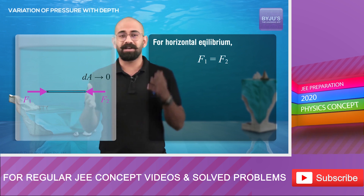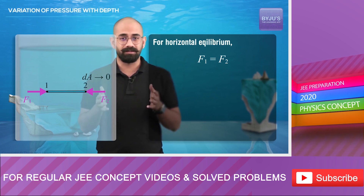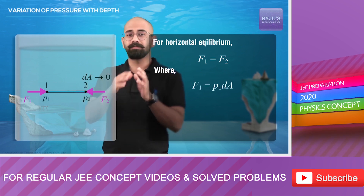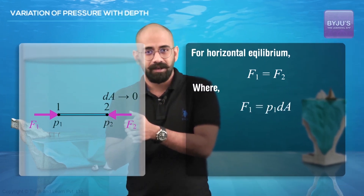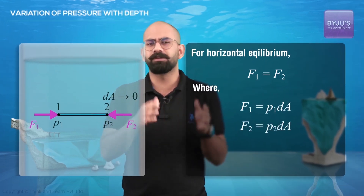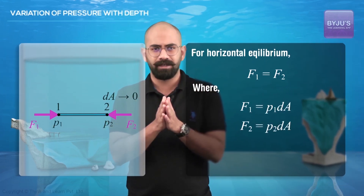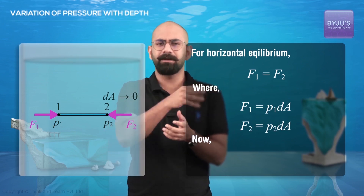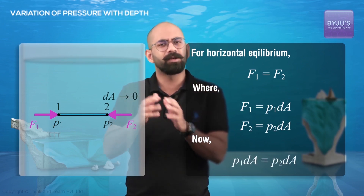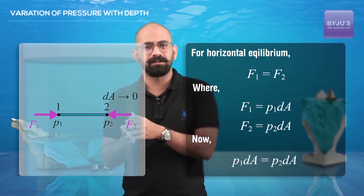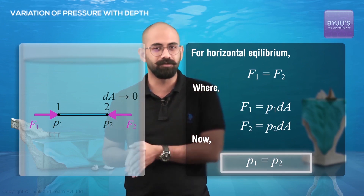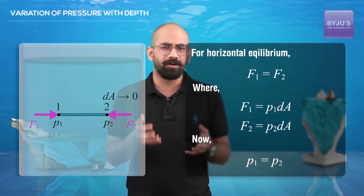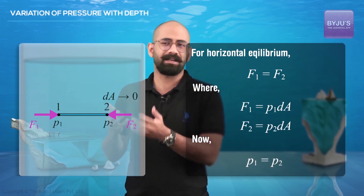Now, if we assume the pressure at these points to be P1 and P2, then F1 should equal P1·DA and F2 should equal P2·DA. If I replace that in the equation, I get P1·DA equals P2·DA, therefore P1 equals P2. This is just another simple way of proving exactly the same thing. One thing to keep in mind is that these pressures are not average pressures but pressures at those points, because DA is very small.